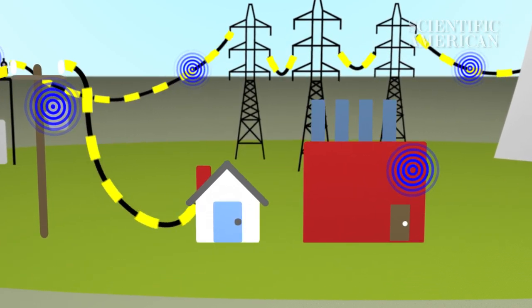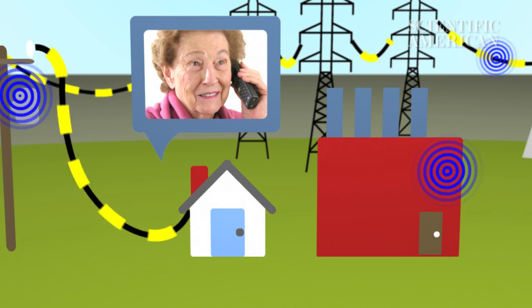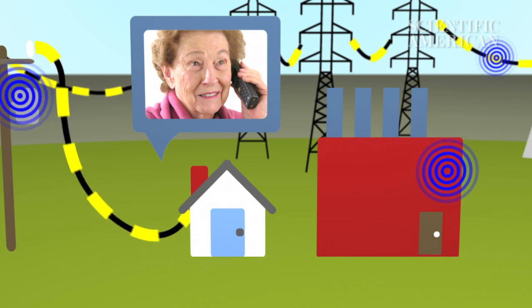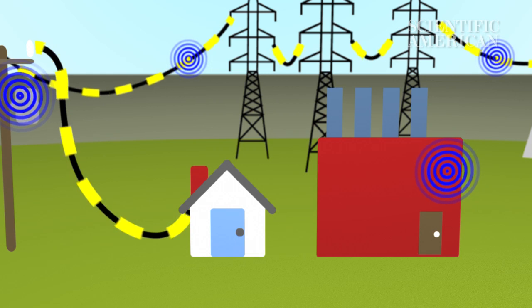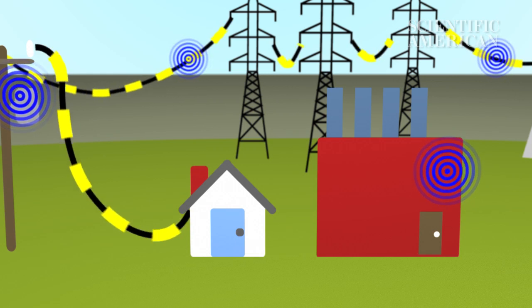That means utility companies can stop relying on grandma to let them know the power's out. It also means they can better deal with power line failures, like the one that blacked out the northeastern U.S. in 2003.